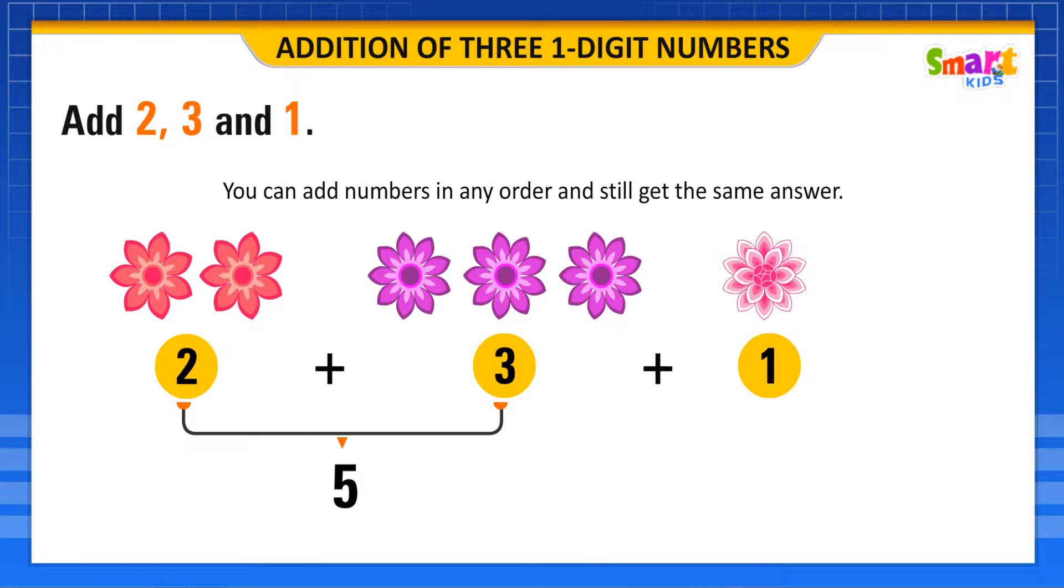Now, we add the third number 1 to the sum, which is 5. So, 5 plus 1 is equal to 6.